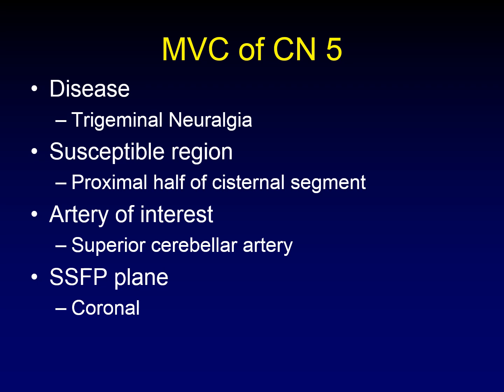The artery most commonly responsible for microvascular compression of CN V is the superior cerebellar artery — it comes down inferiorly and touches the nerve. If you are imaging with steady-state free precession — that's Fiesta on GE scanners and CISS on most other manufacturers — the coronal plane is the most useful plane of imaging.